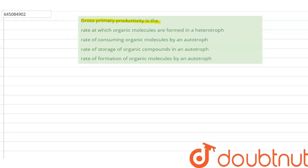Okay, now what is this gross primary productivity? It is basically the rate of formation, or we can say the rate of synthesis, the rate of formation of the organic matter. Rate of formation of organic matter.